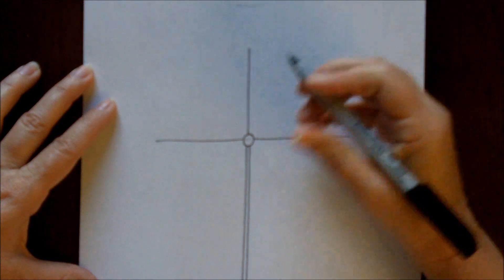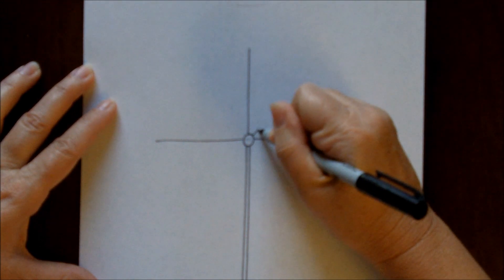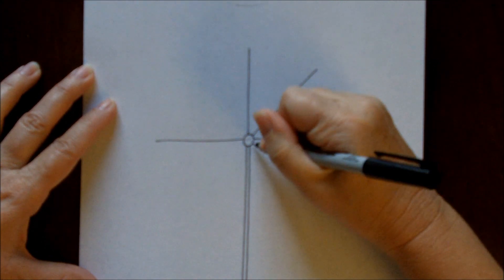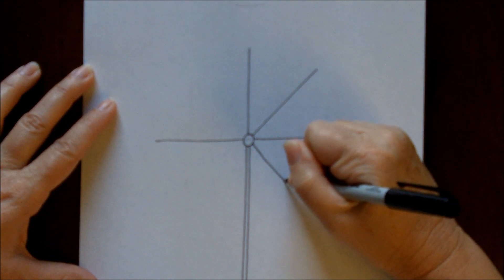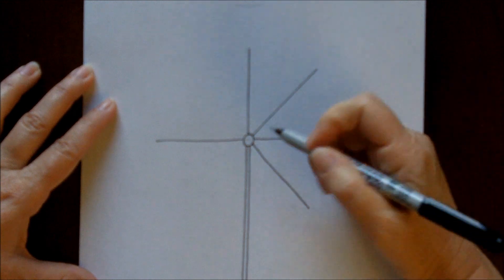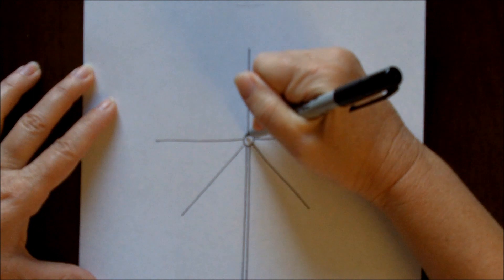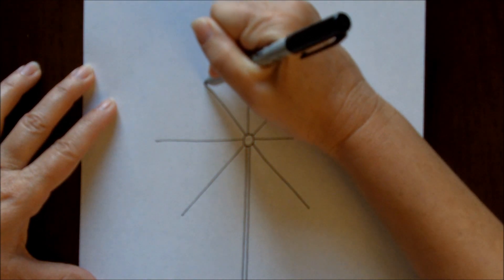Now what we'll want to do is find the halfway point between these two and come out the same amount, the same distance. And then again the same distance between these two lines and the same distance. It doesn't have to be exact, of course.